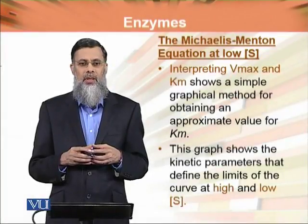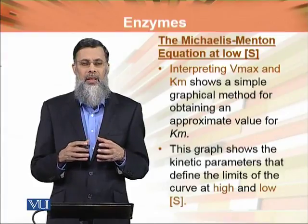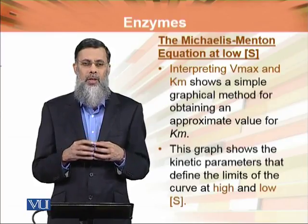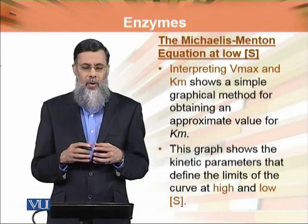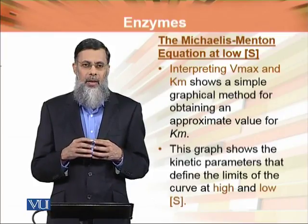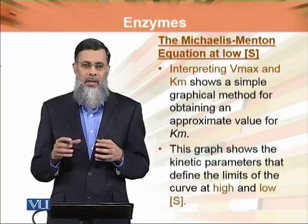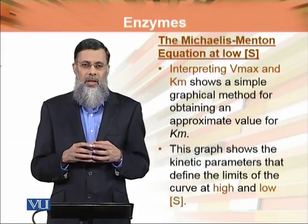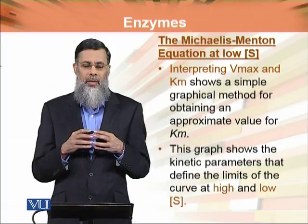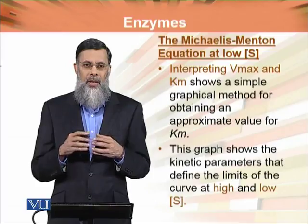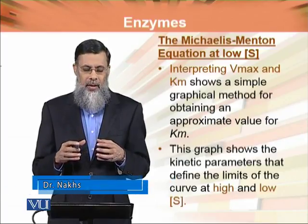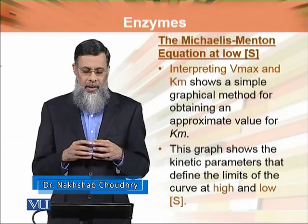The Michaelis-Menten equation at low substrate concentration. In this module we will discuss what will be the effect of substrate concentration on V0 when it is very very low as compared to Km. We will define this from the same hyperbolic graph between V0 (initial velocity) and substrate concentration, and then derive mathematically what effect it will have on V0 when substrate concentration is very very low.